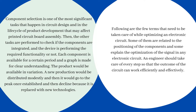Other tasks are then performed to check if the components are integrated and the device is performing the required functionality. Each component is available for a certain period, and a graph is made for clear understanding. A product will be available in variation — new production is distributed modestly, then goes to a peak once established, and then declines because it is replaced by new technologies. The following terms need to be taken care of while optimizing an electronic circuit, covering component positioning and signal optimization.